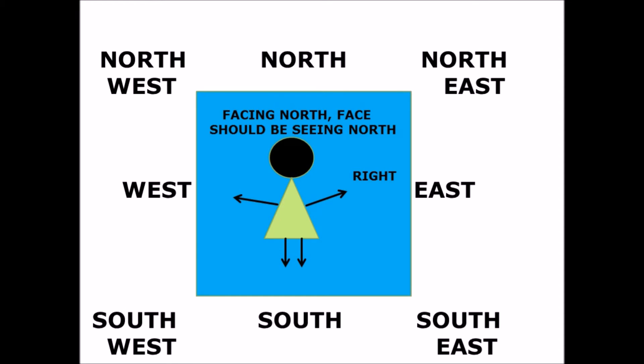Another way to find directions: the sun always rises in the east. So when your face is turned towards east, your left hand always points towards north. In this way you can also find out the directions.